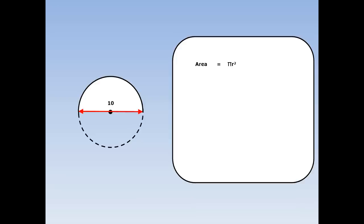Write down the formula for the whole circle: area equals pi r squared. Pi is 3.14, and r squared means the radius times the radius. Now the radius here is half of 10, which is 5, so it's 3.14 times 5 times 5. That equals 78.5 centimetres squared.